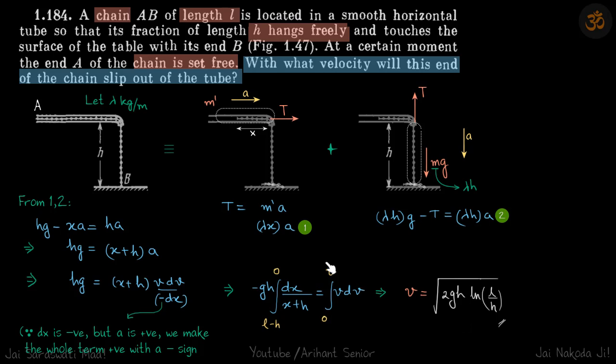Of course, for a given distance x, you can also find out what will be the velocity of the chain at that particular moment. You'll just put the limits from L minus h to x in that case, and you will get velocity as a function of x.